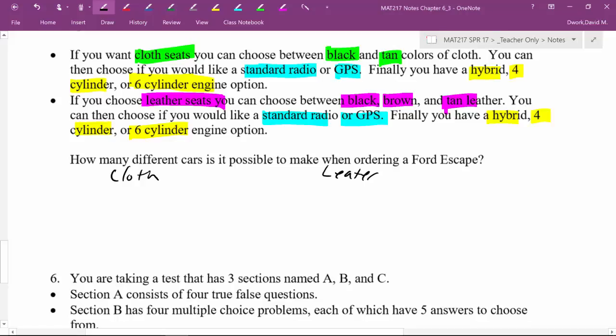Now, so when I had cloth, I had how many choices to make? Well, I have the color of the seats, I had a decision of color of the seat, then I have a decision of the radio, and then I had a decision related to the engine, right? Okay, with the leather, I had very similar things, same thing, color, radio, engine, same idea.